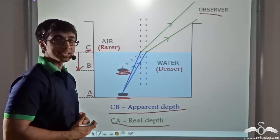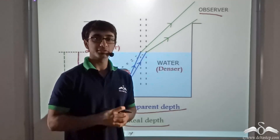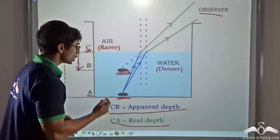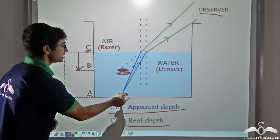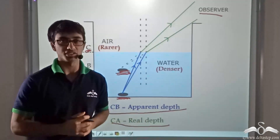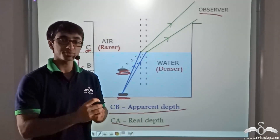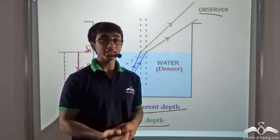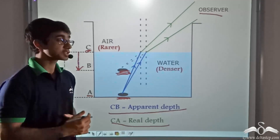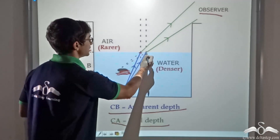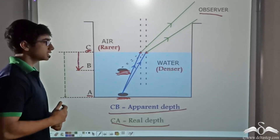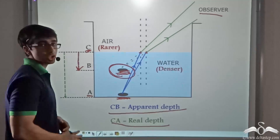So to take a quick recap: we learnt that when a coin is placed in water, or any other object for that matter, it will not appear at its original position — it will appear raised. Just like we saw in the video, we had kept a coin in an empty glass at first and kept it at a position where we could not see the coin. Once we added water in the cup, the coin was visible to us. This was because of the refraction of light rays at the water-air interface. We, the observer, were able to see the apparent position of the coin.